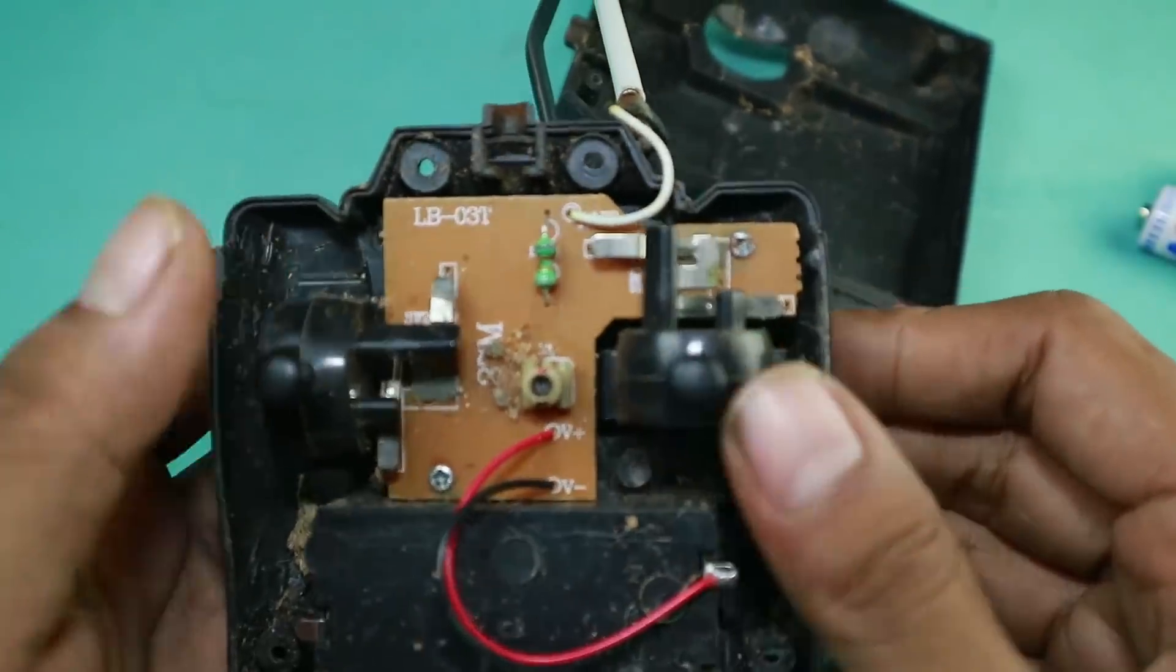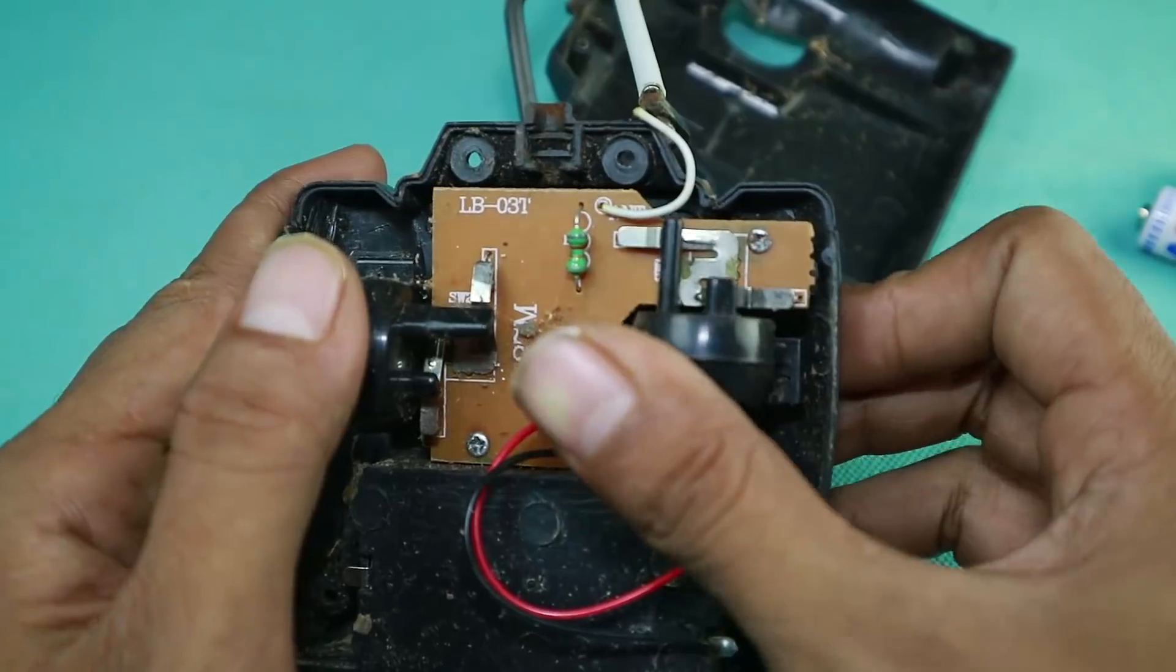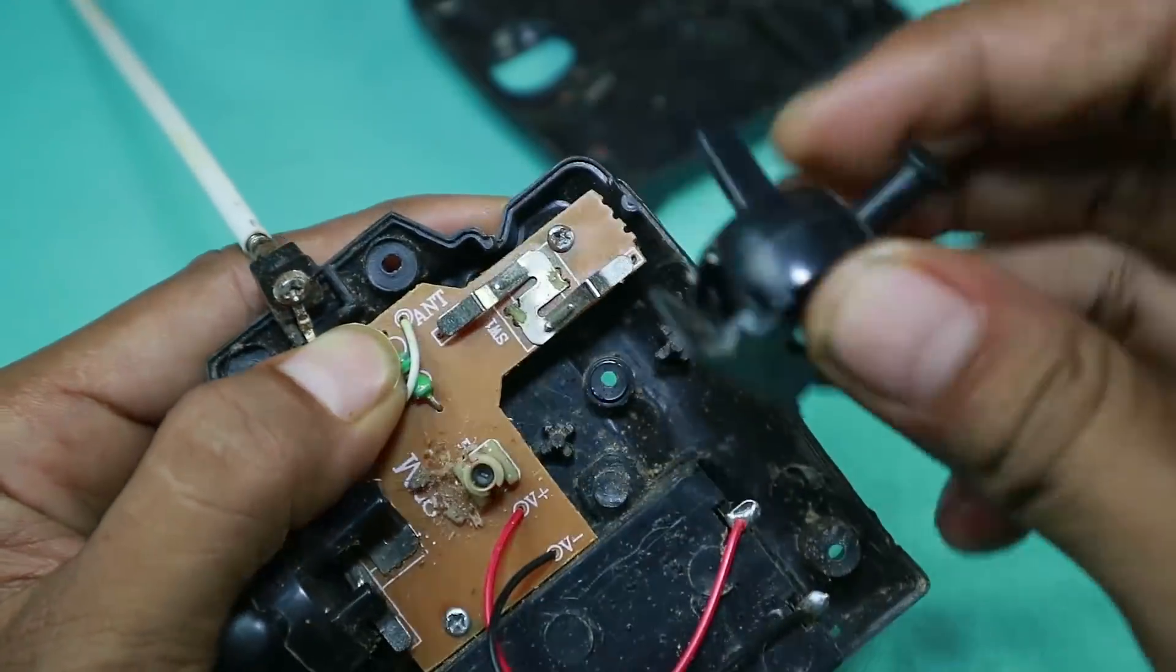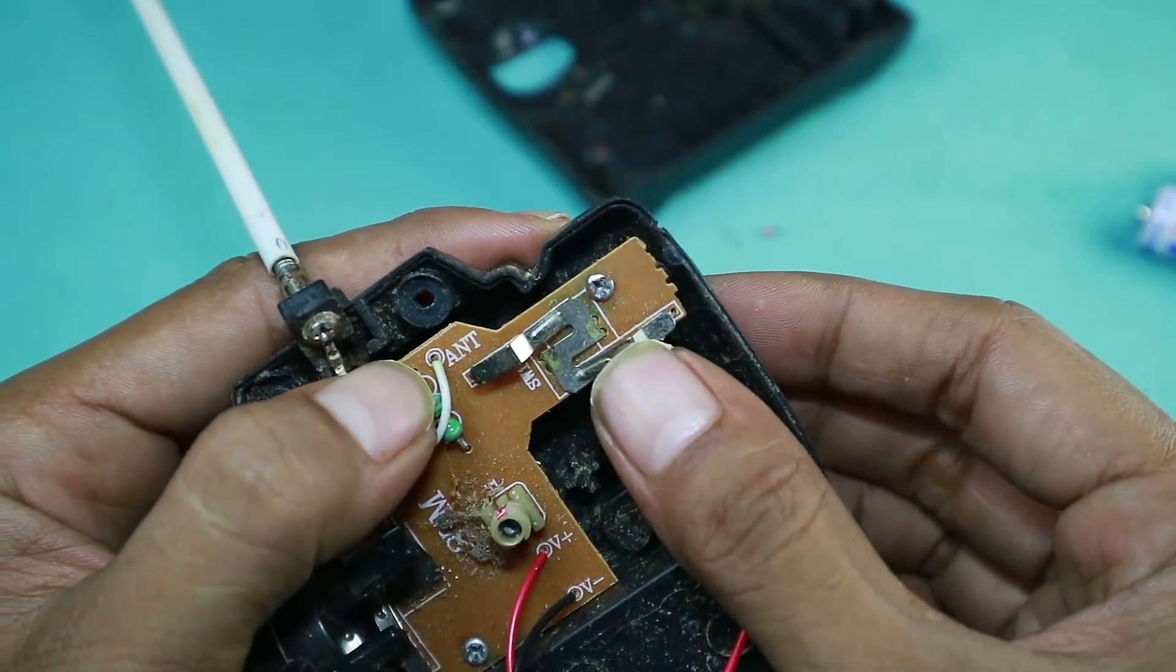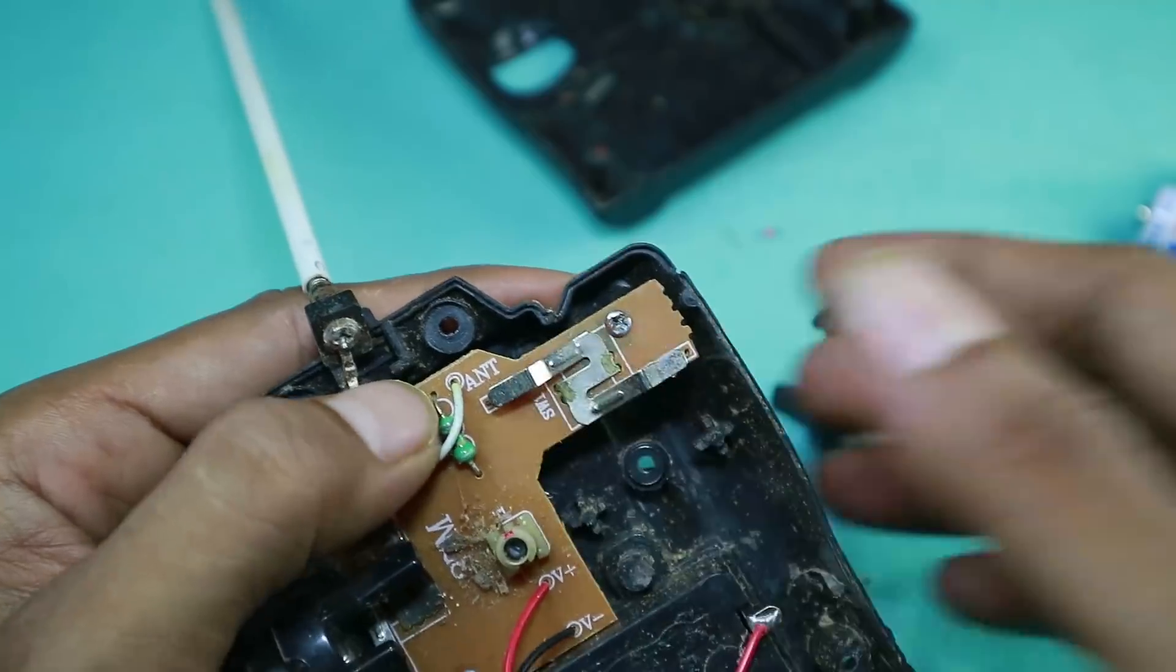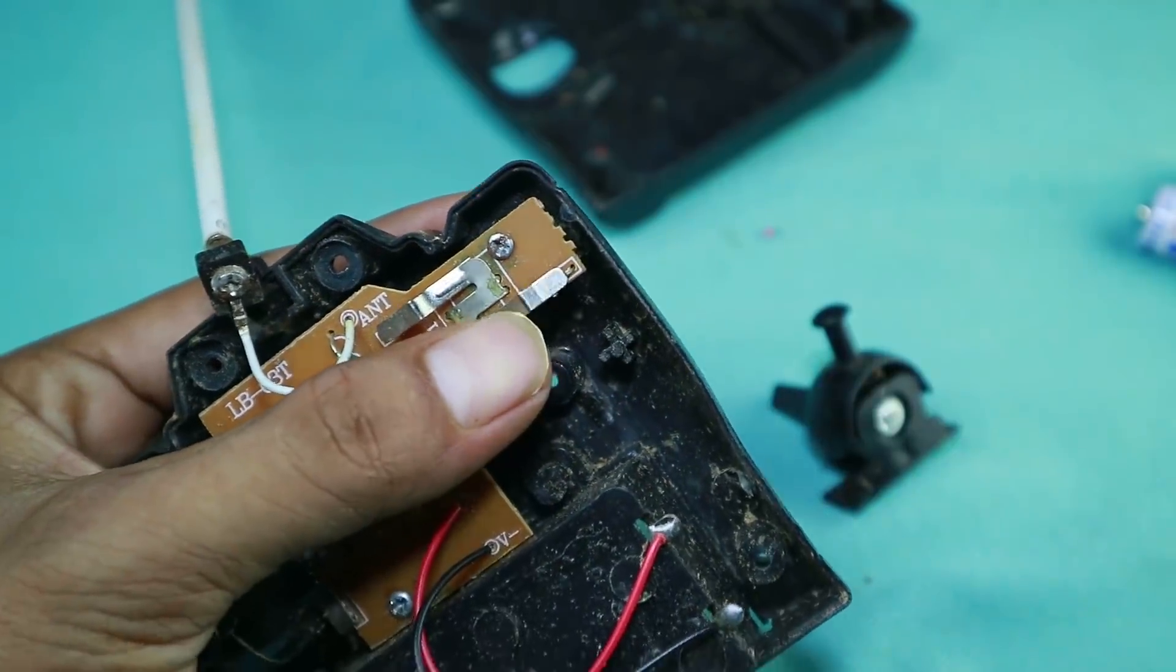Saat menggeser ke kanan, sebenarnya ada sesuatu yang nempel ya, atau konslet, atau semacam saklar gitu. Sepertinya itu adalah nempel, dan sudah menempel saat kita geser ke kanan untuk diri, yaitu kita tekan kanan untuk diri.